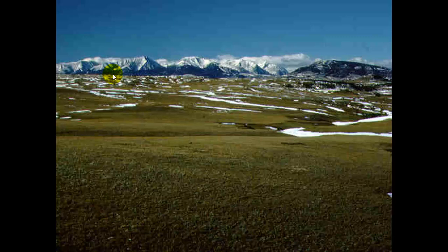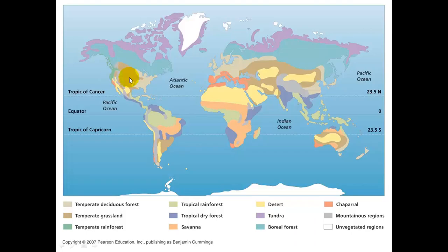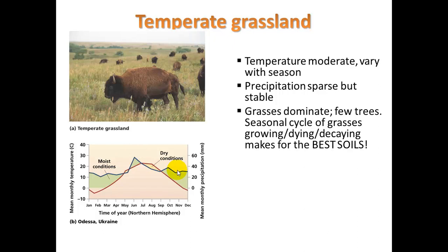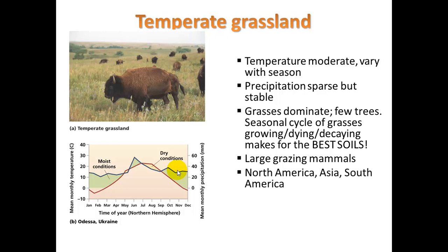Finally, we'll take a look at temperate grassland — moving into the Great Plains. Temperature is moderate but varies with the season: very hot in the summer, very cold in the winter. Precipitation is sparse but stable — it doesn't get a lot but it happens throughout the year, as you can see from the graph. Grasses dominate; there are very few trees. There's a seasonal cycle of grasses growing, dying, and decaying, which makes for the best soils — those nutrients are returned to the soil. The grasses also have deep roots because precipitation is sparse, so even root decay enriches the soil. We get large grazing mammals like buffalo, and we find this biome in North America, Asia, and South America.